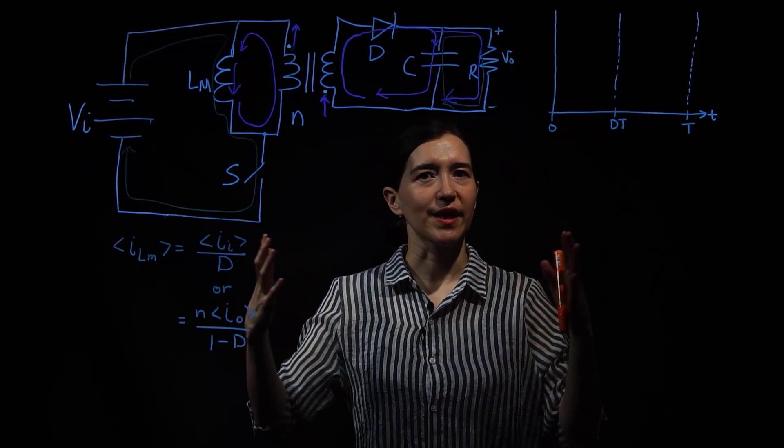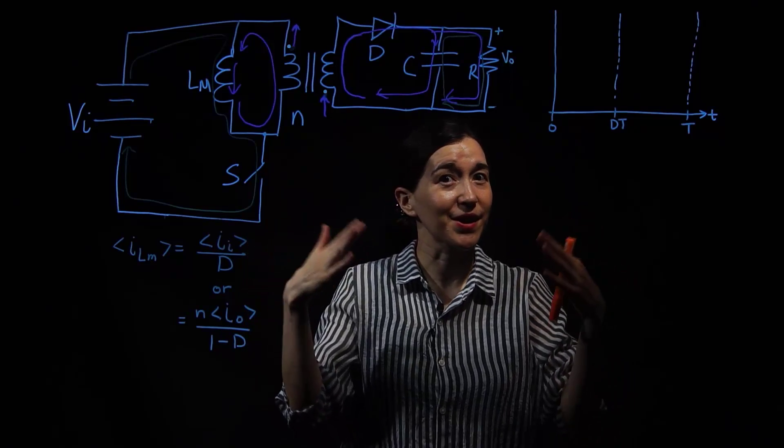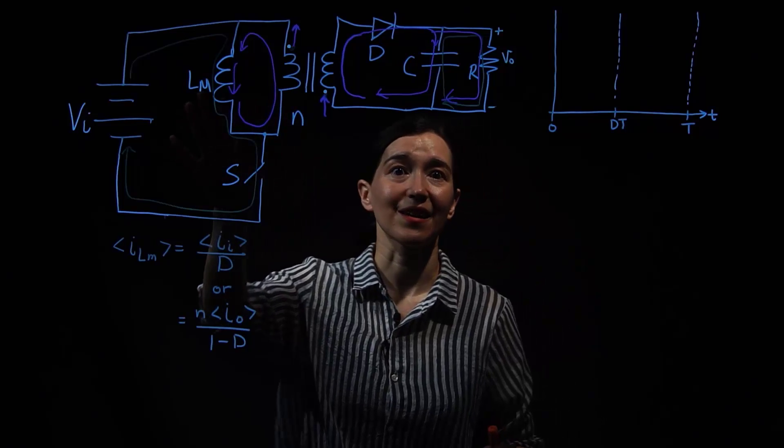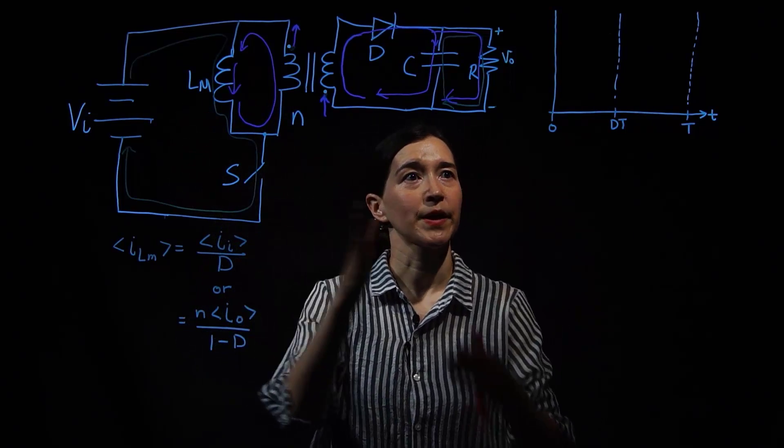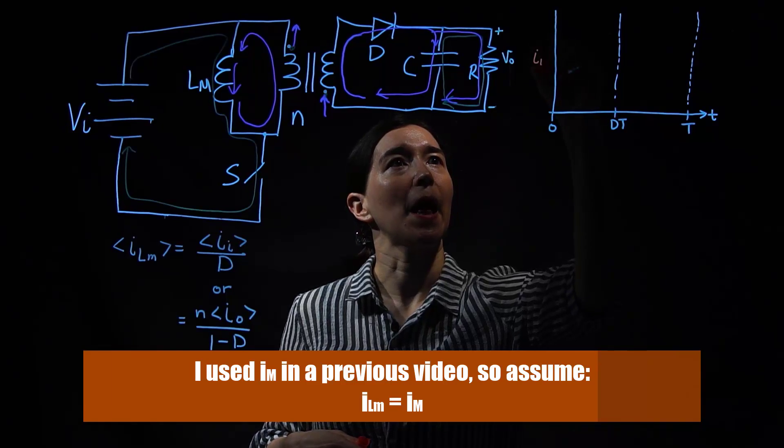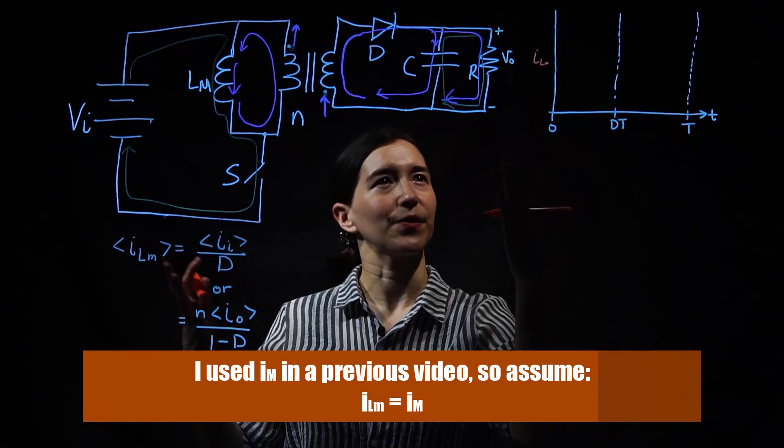So to do that we need to look at my favorite waveform which is the current waveform of the inductor. In this case it's the magnetizing inductor of the flyback converter. So we're going to plot that here, I L M because it's a coupled inductor.